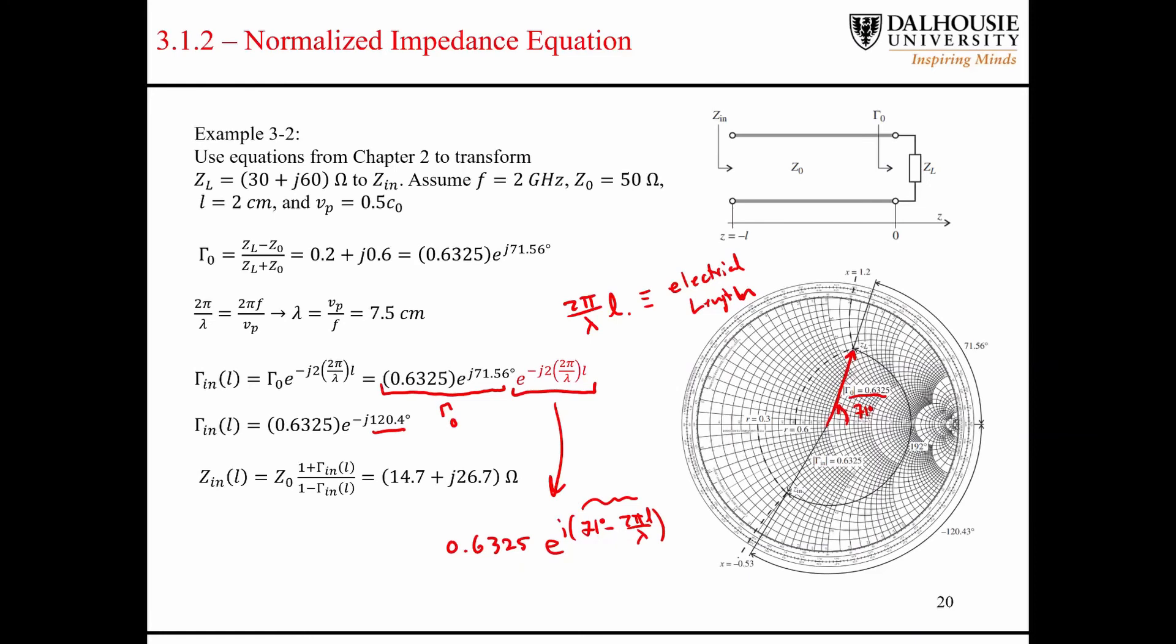...or it's negative 120 degrees, I should say. So the point that we end up at is the point negative 120, corresponding to an angle of negative 120 degrees, but with the same amplitude.